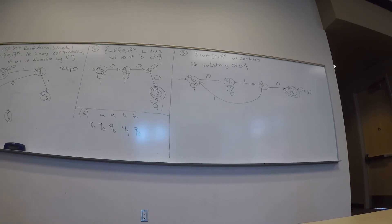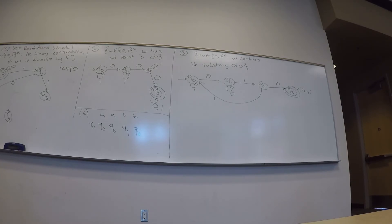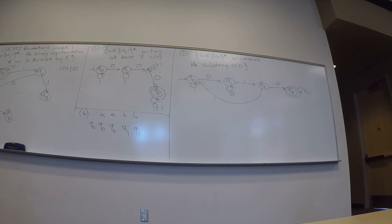For Q2, remainder is 2. Multiplying by 2: 2 times 2 is 4, and 4 mod 5 is still 4. So Q2 on 0 goes to Q4. For Q2 on 1: wherever I ended up on 0 was 4, plus 1 mod 5 is 0. So Q2 on 1 goes back to Q0.